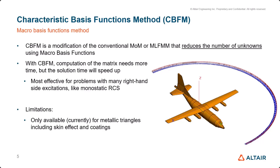This method is most effective for problems with many right-hand side excitations. For example, in the case of monostatic RCS, in a typical Method of Moments solution of Z·i = V, only the incident angles or the excitations which are part of the V matrix on the right-hand side are changing. So for those types of cases, this method will help a lot to both reduce memory and speed up simulation time. The current limitation is its applicability only to metallic structures; however, dielectrics can be supported as coatings on these metallic surfaces.